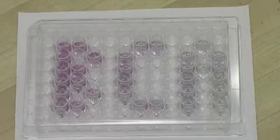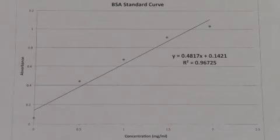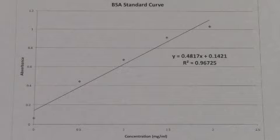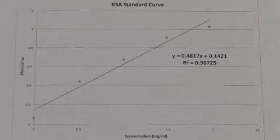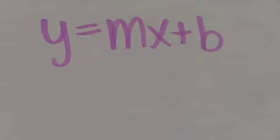Take a moment to admire the beauty of the BCA assay and get ready to analyze your data. You will generate your BSA standard curve by using Excel and plotting absorbance versus concentration in milligrams per milliliter. Add a trend line and display the equation of the line in y equals Mx plus B format. You will use the M and B values to calculate the unknown protein concentration.